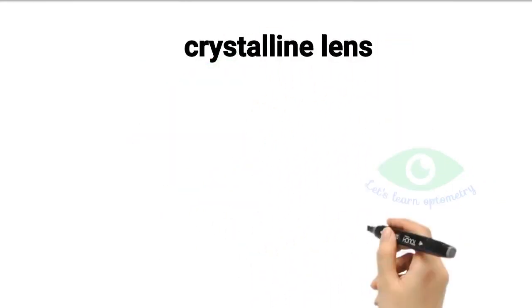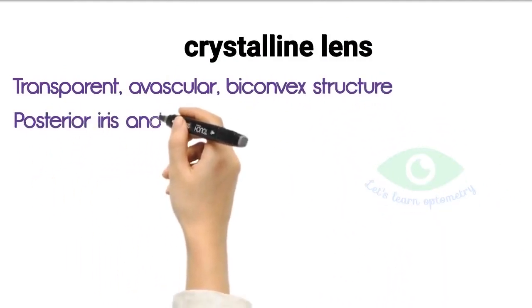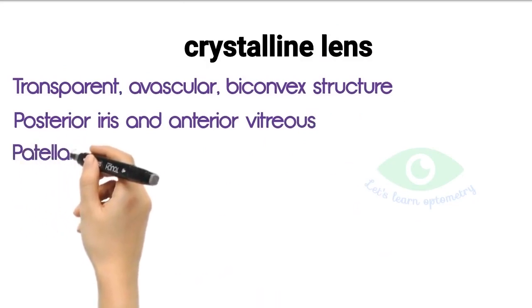The crystalline lens is an avascular, biconvex, transparent structure located between the posterior surface of the iris and anterior surface of the vitreous in a saucer-shaped depression called patellar fossa.